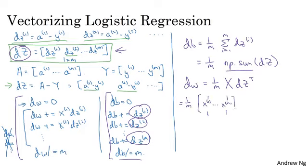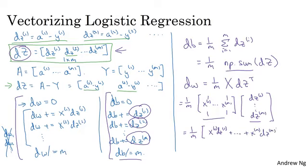And to see why that's the case, this is equal to 1 over m, then the matrix X is x1 through xm stacked up in columns like that. And dZ transpose is going to be dz1 down to dzm. And so if you figure out what this matrix times this vector works out to be, this turns out to be 1 over m times x1 dz1 plus dot dot dot plus xm dzm. And so this is an n by 1 vector.